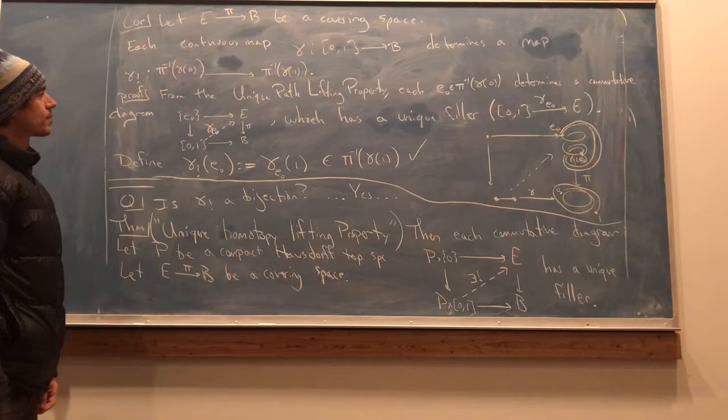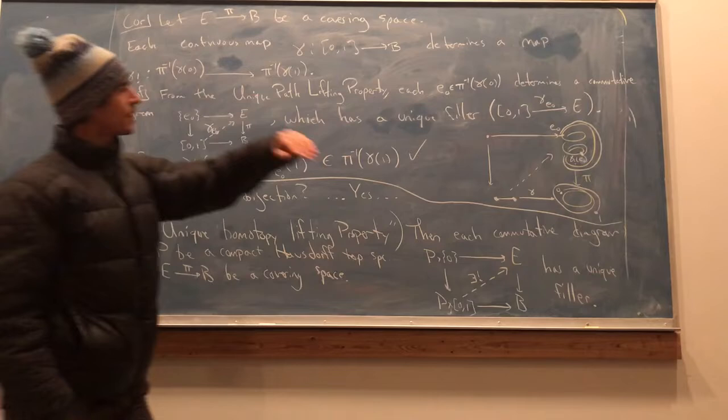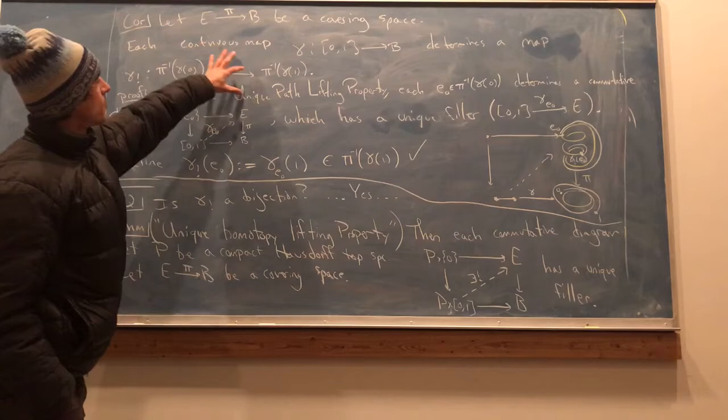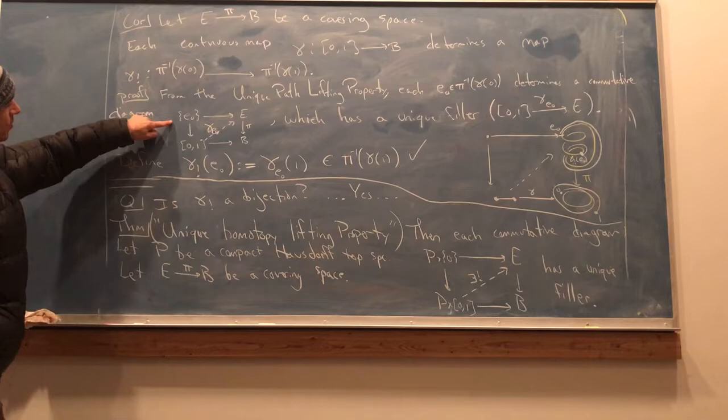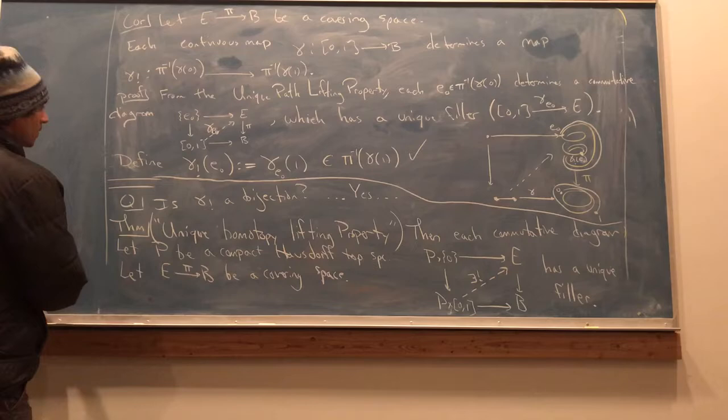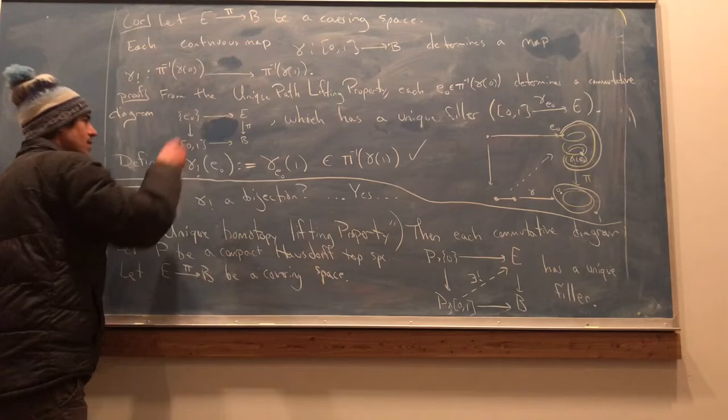So for the proof, well, from the unique path-lifting property. So each element in this set, in the domain of the map we're trying to construct, call that element E sub zero, zero because of time zero. Each of those elements determines a commutative diagram like this.